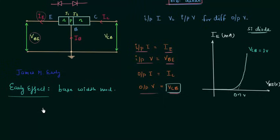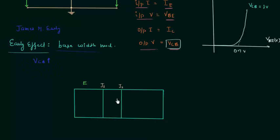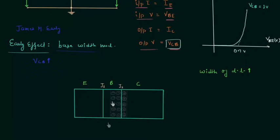In the Early Effect, there is modulation of base width when we increase the reverse bias voltage VCB. This is the emitter region, this is the base region, and this is the collector region. Junction J1 is forward biased and junction J2 is reverse biased. In reverse bias condition, the width of the depletion layer increases, and the depletion layer will penetrate more into the base region because it is lightly doped. You can see the penetration of the depletion layer is more in the base region.